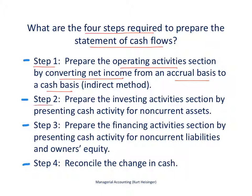In step two, we prepare the investing activity section. This is the second section that appears in the statement of cash flows, and it is always in this order. This information is cash activity related to non-current assets. For example, cash activity related to the purchase of a building, the sale of a building, the purchase of an automobile, or the purchase of an intangible asset would show up in this section.